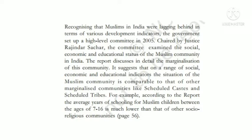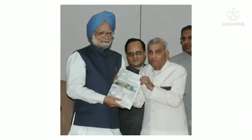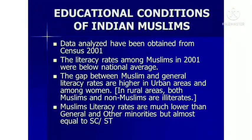For example, according to the report, the average years of schooling for Muslim children between the ages of 7 to 16 is much lower than that of other social and religious communities. In rural areas, both Muslims and non-Muslims are illiterate, but Muslims' literacy rates are much lower than the general population and other minorities, though almost equal to SC and ST.